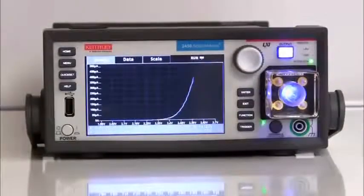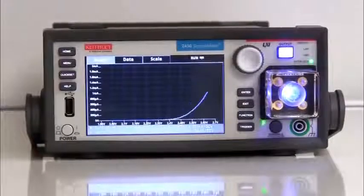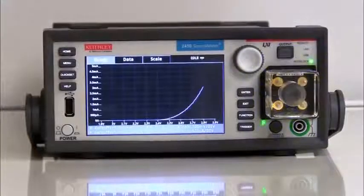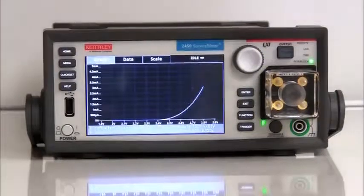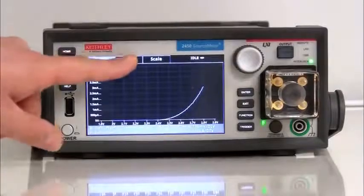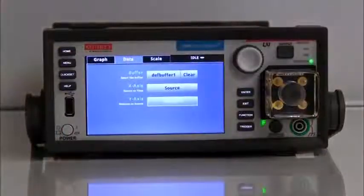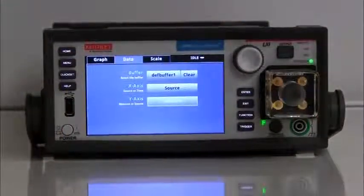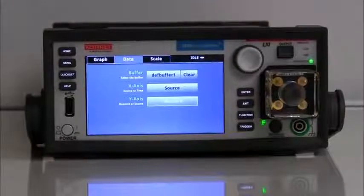The graph view gives the user full flexibility to display specific data buffers and what data is used on the X and Y axis. The X axis can display source or time data versus source or measure data on the Y axis.